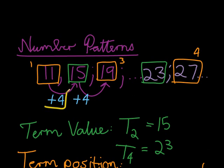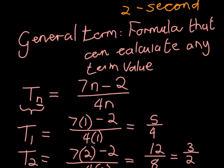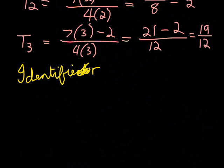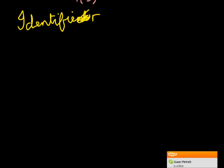The identifier represents how we're getting the next term. In the first pattern, we were adding 4 every time. But we could have 3, 6, 12, 24, where we multiply by 2 to get the next term. There are three different identifiers we're going to study.